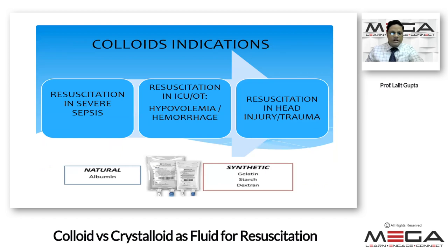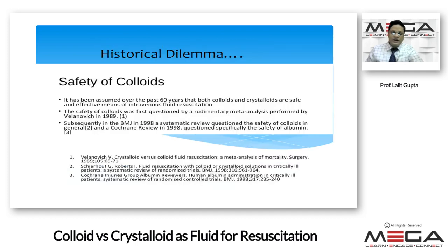Colloids are basically indicated for resuscitation in severe sepsis in the ICU, in cases of hypovolemia or severe hemorrhage in the ICU or operating theatres, resuscitation in head injury or traumatic patients, and in the catheter lab. Colloids are of two types: natural — meaning albumin — and synthetic — meaning gelatin, starch, and dextran. Everyone has been tried in some form of trials to find their utilities. As Ranjit sir specifically said, it's a historical dilemma. The safety of colloids for the last 60 years was considered fine — both are safe. But in 1989, the safety of colloids was first questioned by a rudimentary meta-analysis performed by Velanovic.